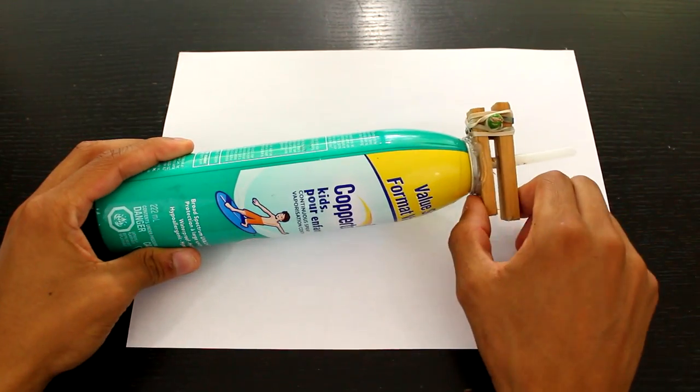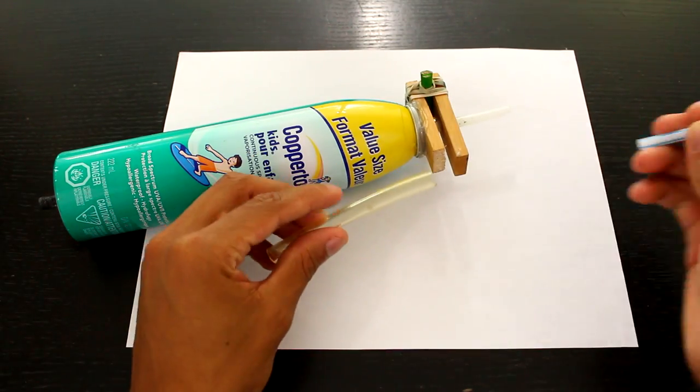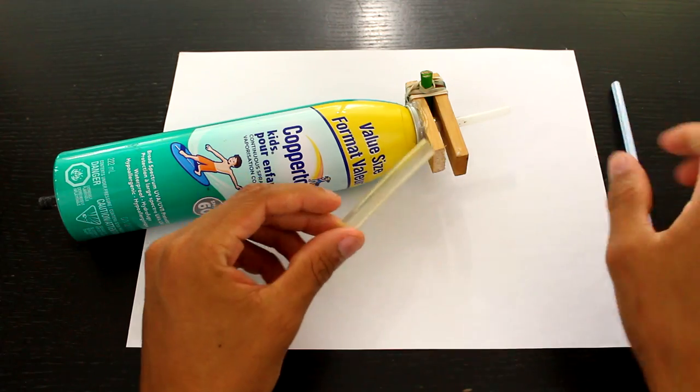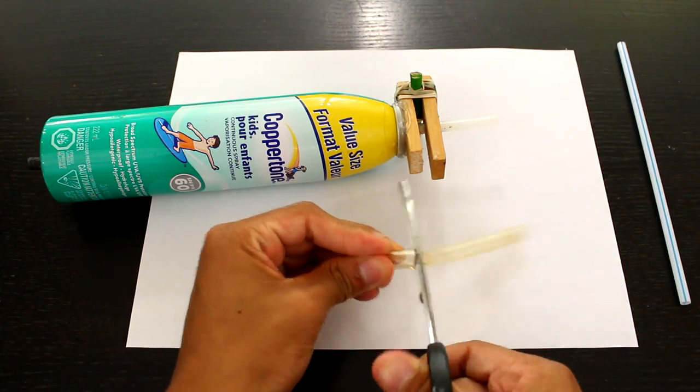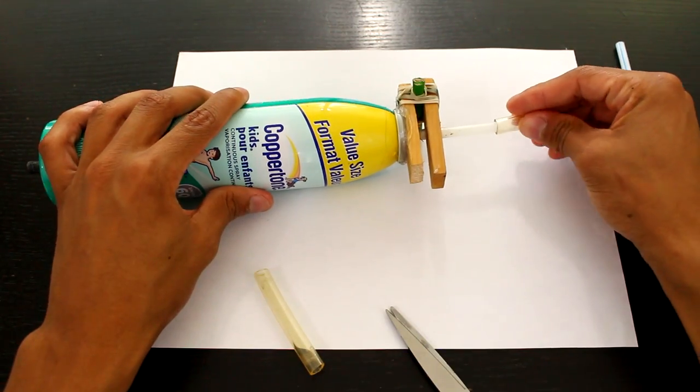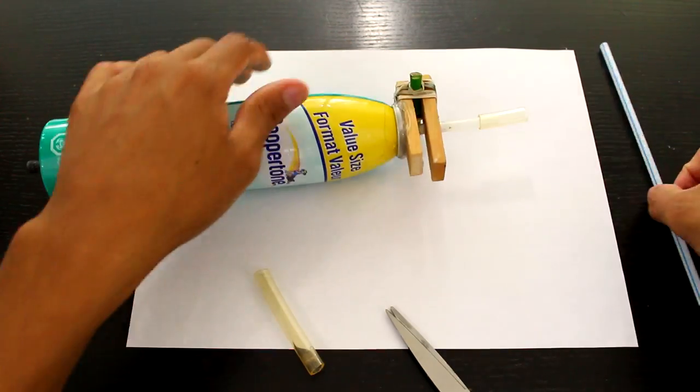Once the air can is made and fully functional now we have to find a way to attach it to the barrel of the gun. To do this I'll use a little bit of tube and attach it to the straw.